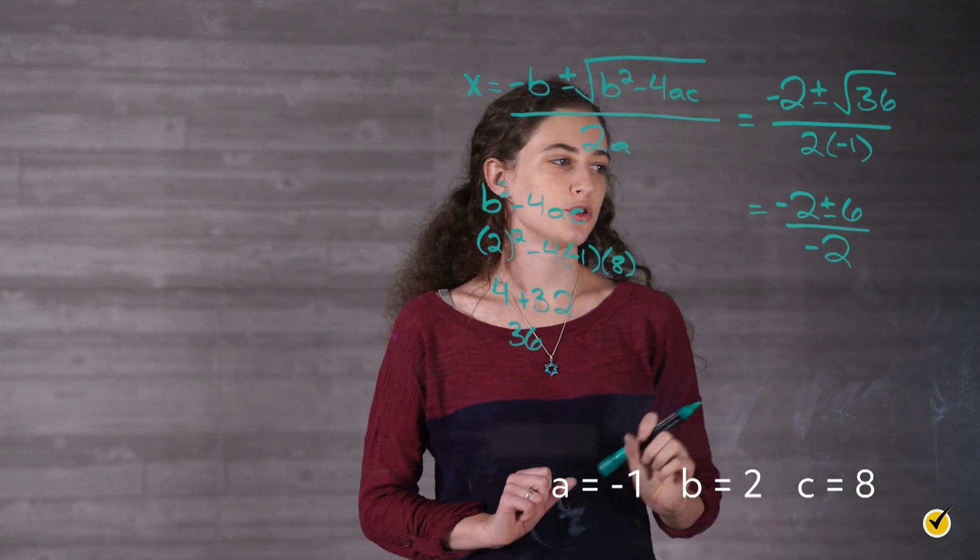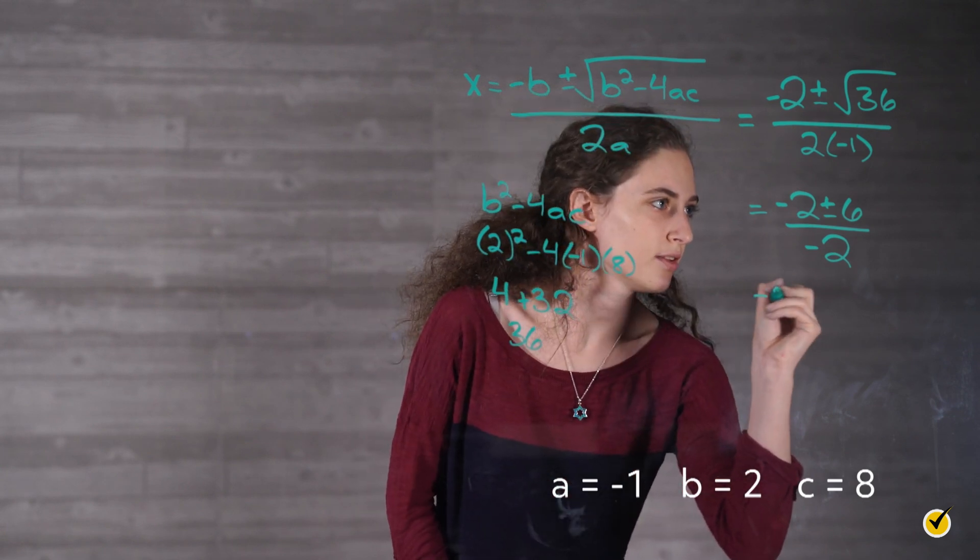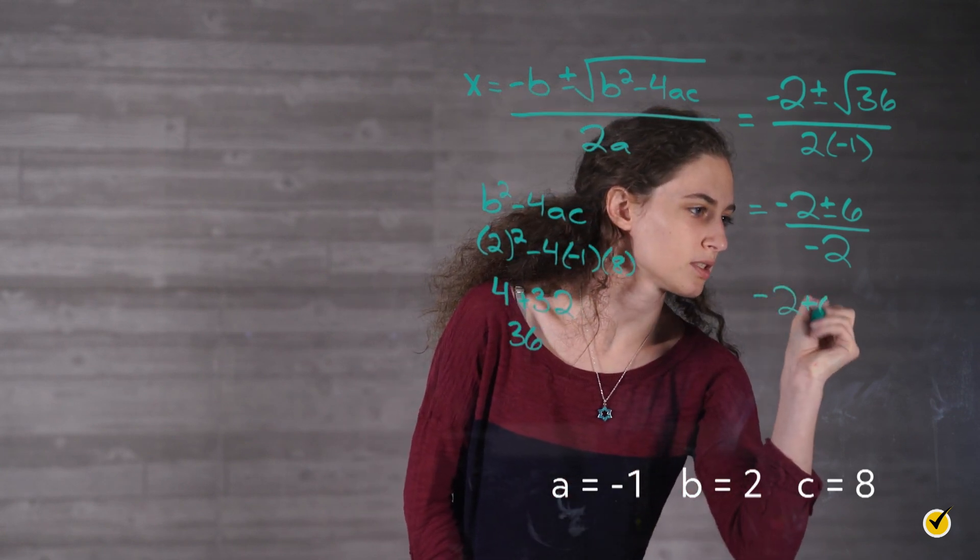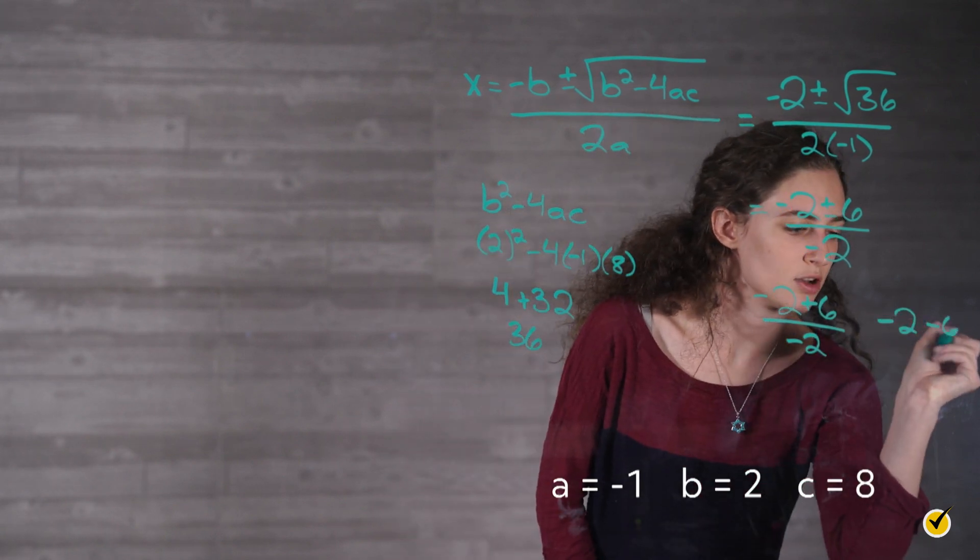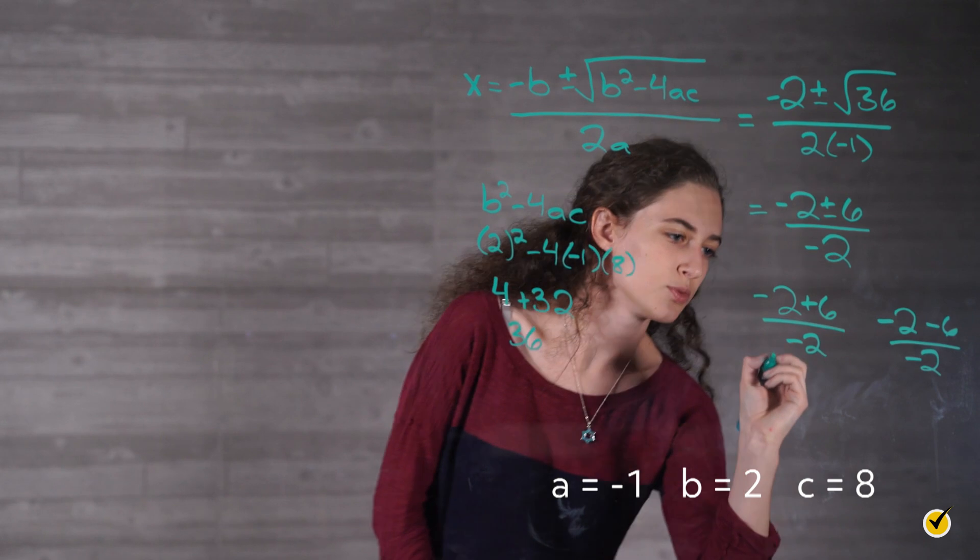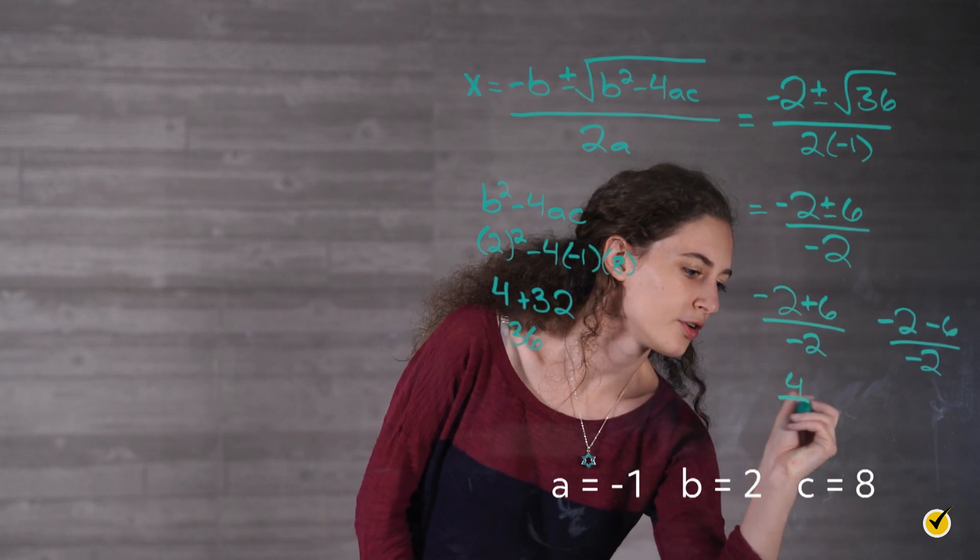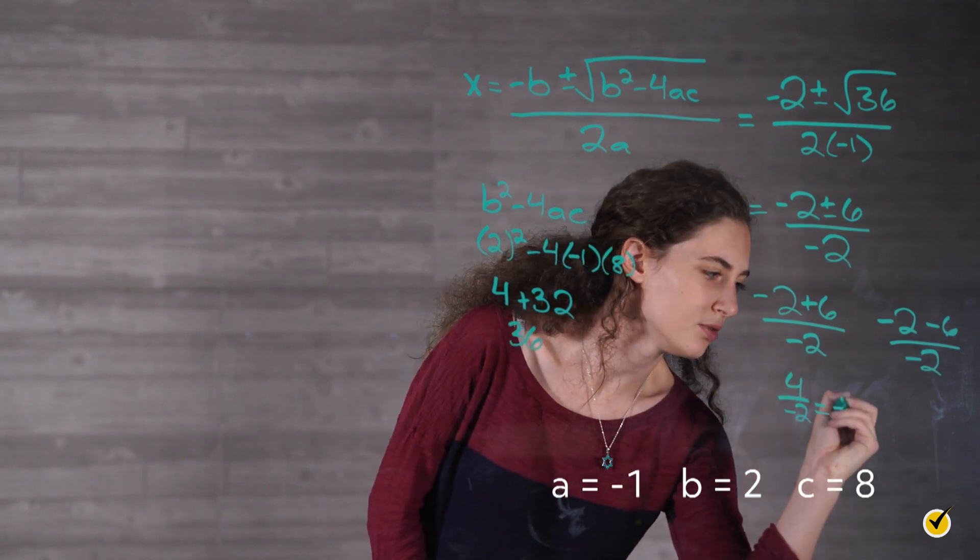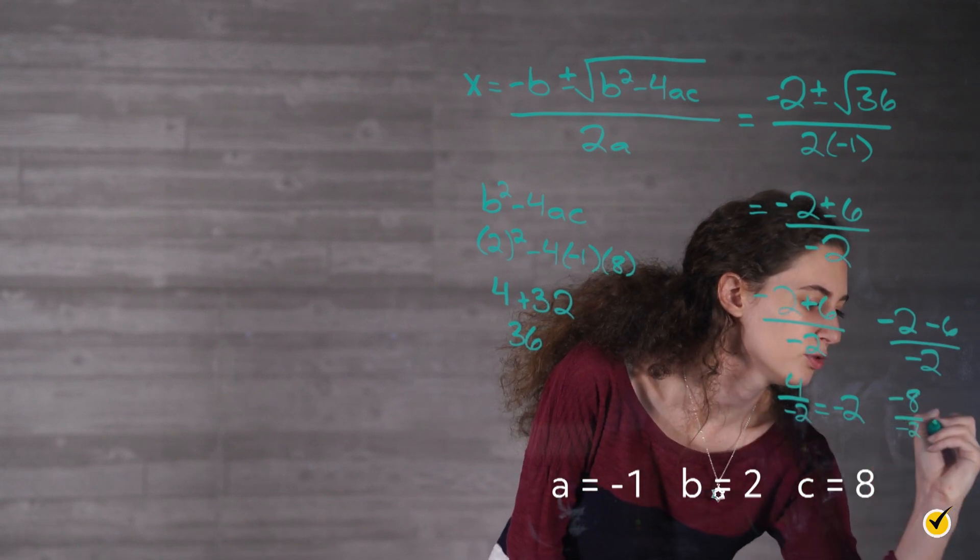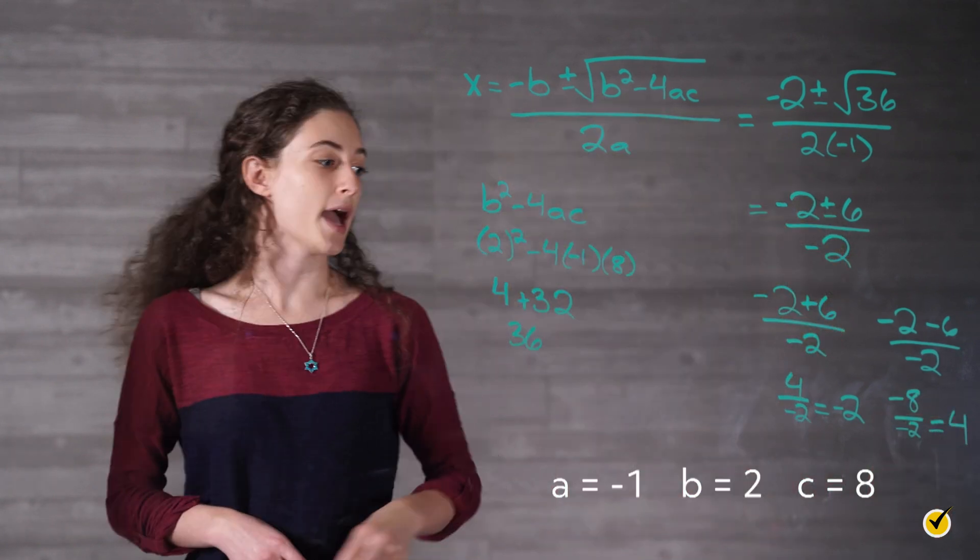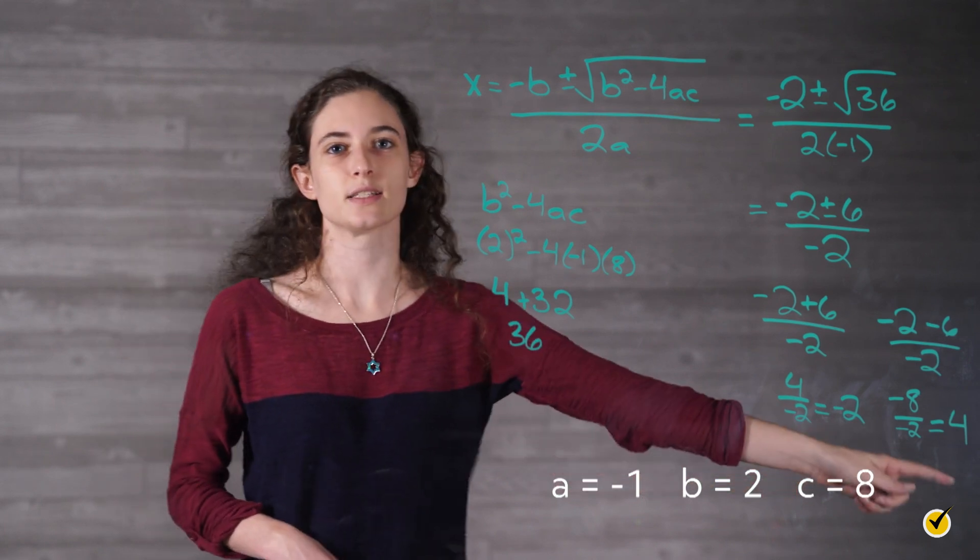Now we're going to split it into two equations. We have negative 2 plus 6 over negative 2, and negative 2 minus 6 over negative 2. This one is equal to 4 over negative 2, which is negative 2. This one gives us negative 8 over negative 2, which is equal to 4. So x equals negative 2, and x equals 4.